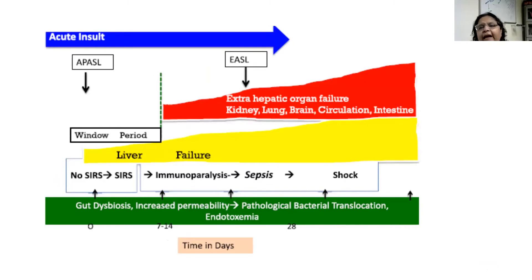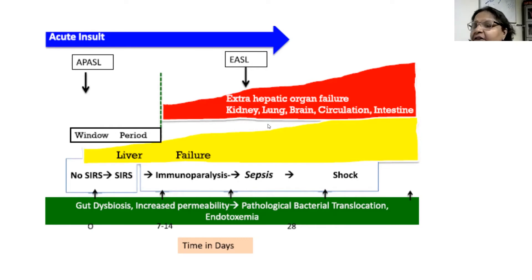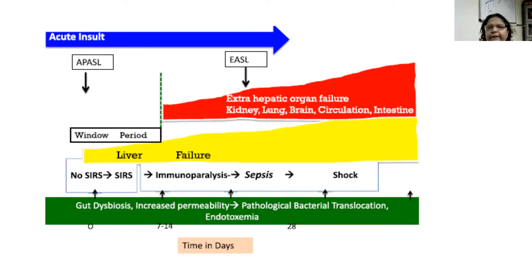This slide shows the difference between APACEL and EASL, and some of the pathogenesis of ACLF. Initially there is no systemic inflammation; then SIRS is present in these patients; then they go into immunoparalysis, then sepsis, and then shock. The APACEL definition tells you that the window period is largely in the first 7–14 days, and this is the time which APACEL is covering. Whereas EASEL does not cover this time because the EASEL definition talks about only extra-hepatic organ failures, which usually happen during the later part of the illness, and by that time it's too late for these patients to have any reversibility.